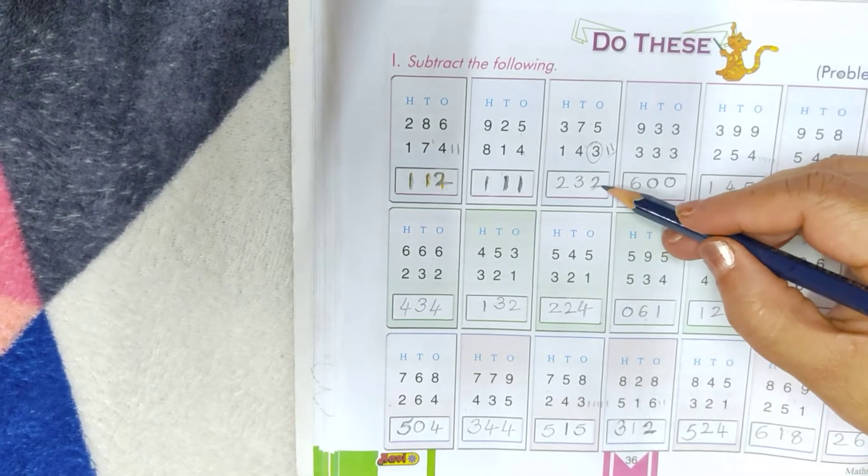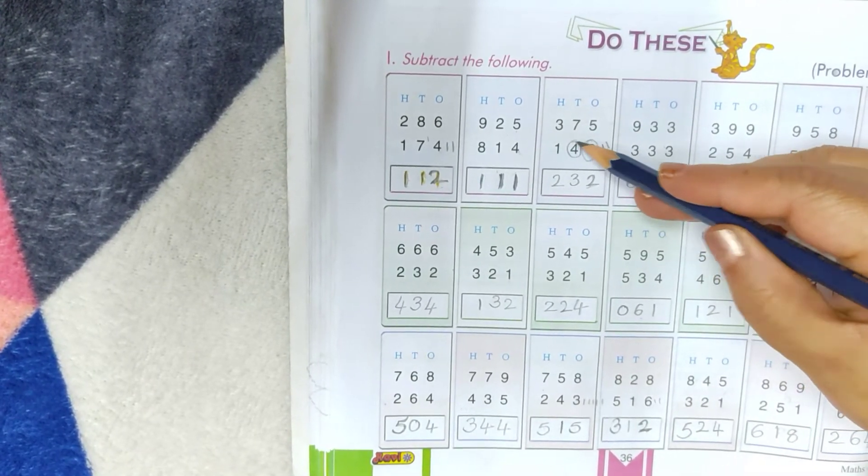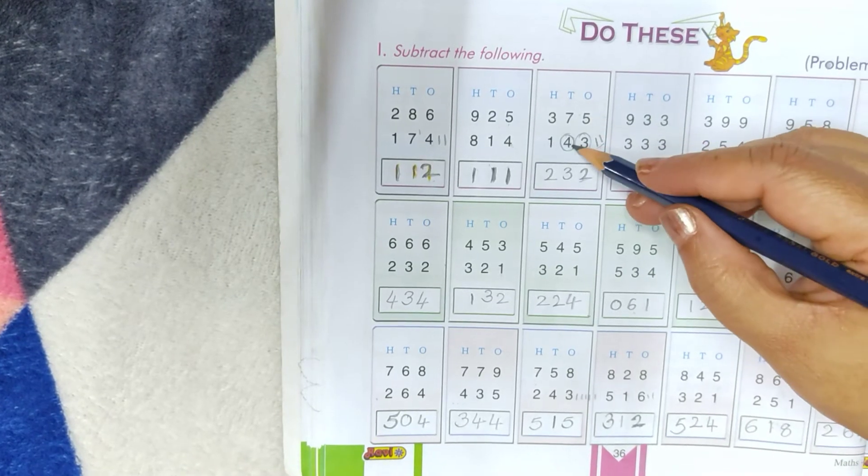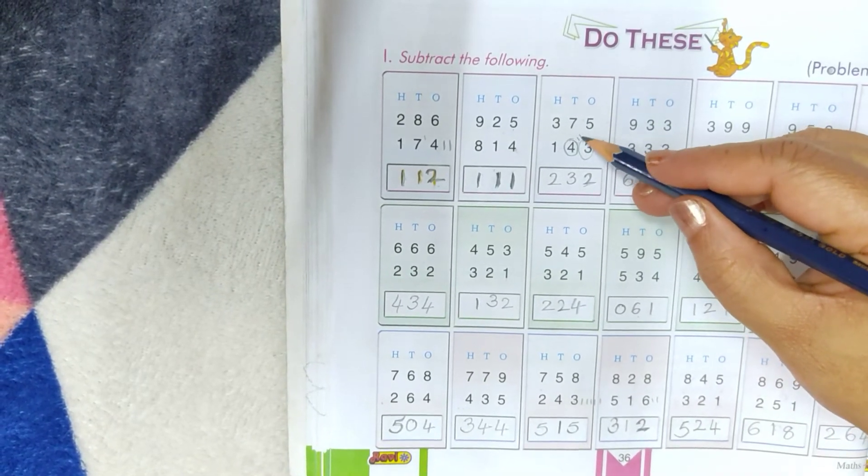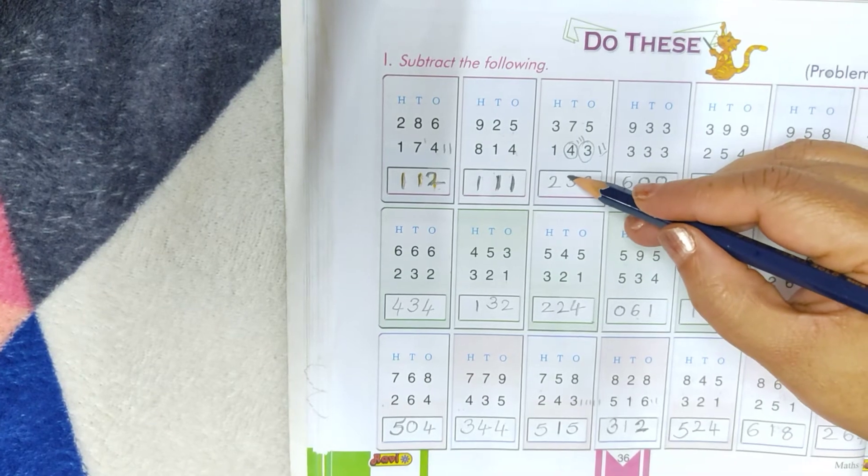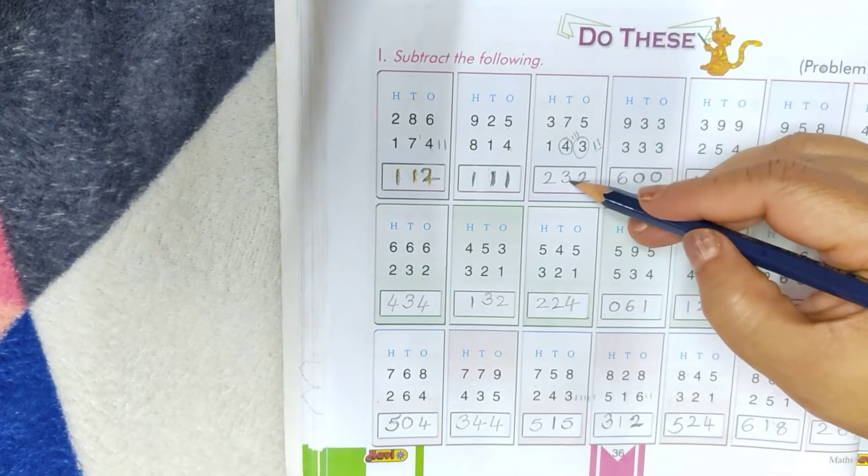Then take 4. Count after numbers. 4, 5, 6, 7. 1, 2, 3. Write 3 under 10's place.